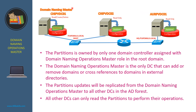Now let's take a look at this Active Directory forest. In this forest, gpvdc01 is the Domain Naming Master. It can read, create, or delete the objects in the partition container. Other domain controllers like gpvdc02 or allpvdc01 can only read the partitions. When gpvdc01 performs any update to the partition container, the update will be replicated to gpvdc02 and allpvdc01.